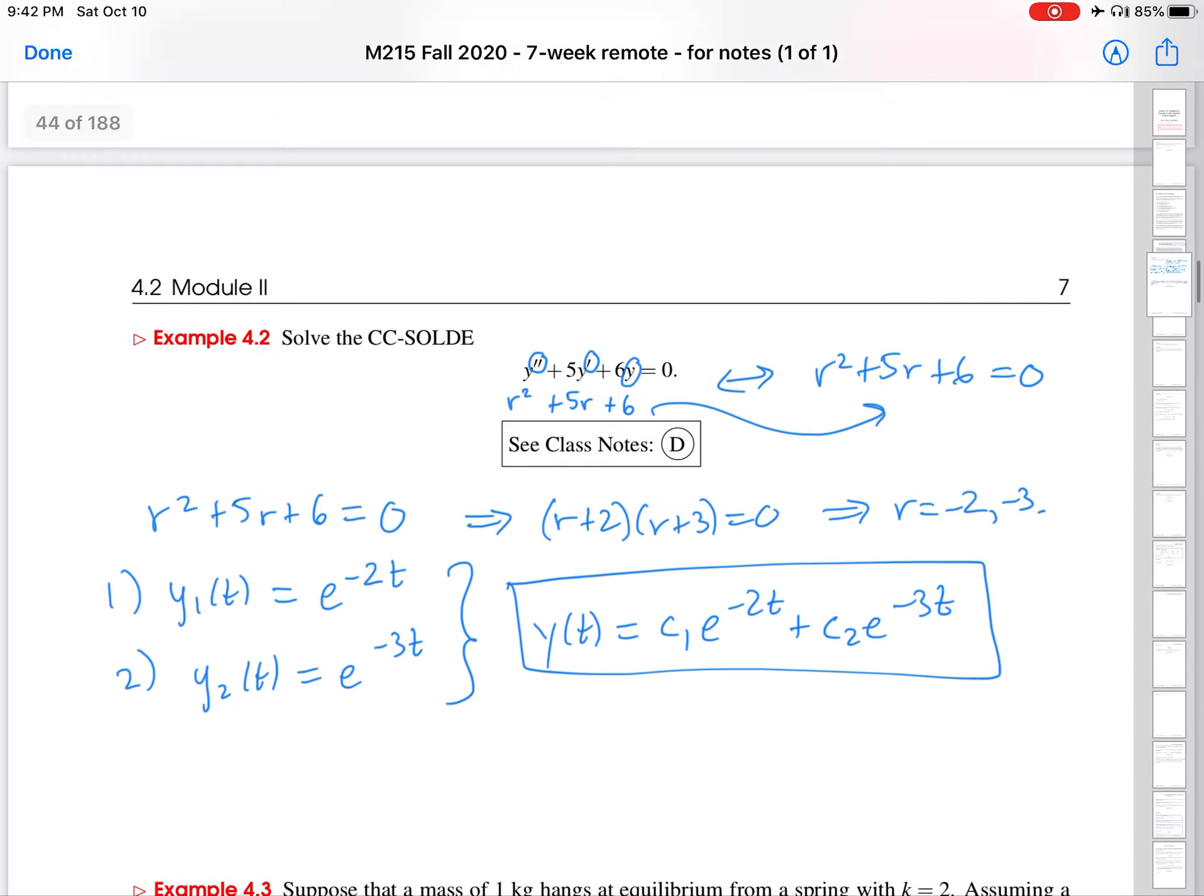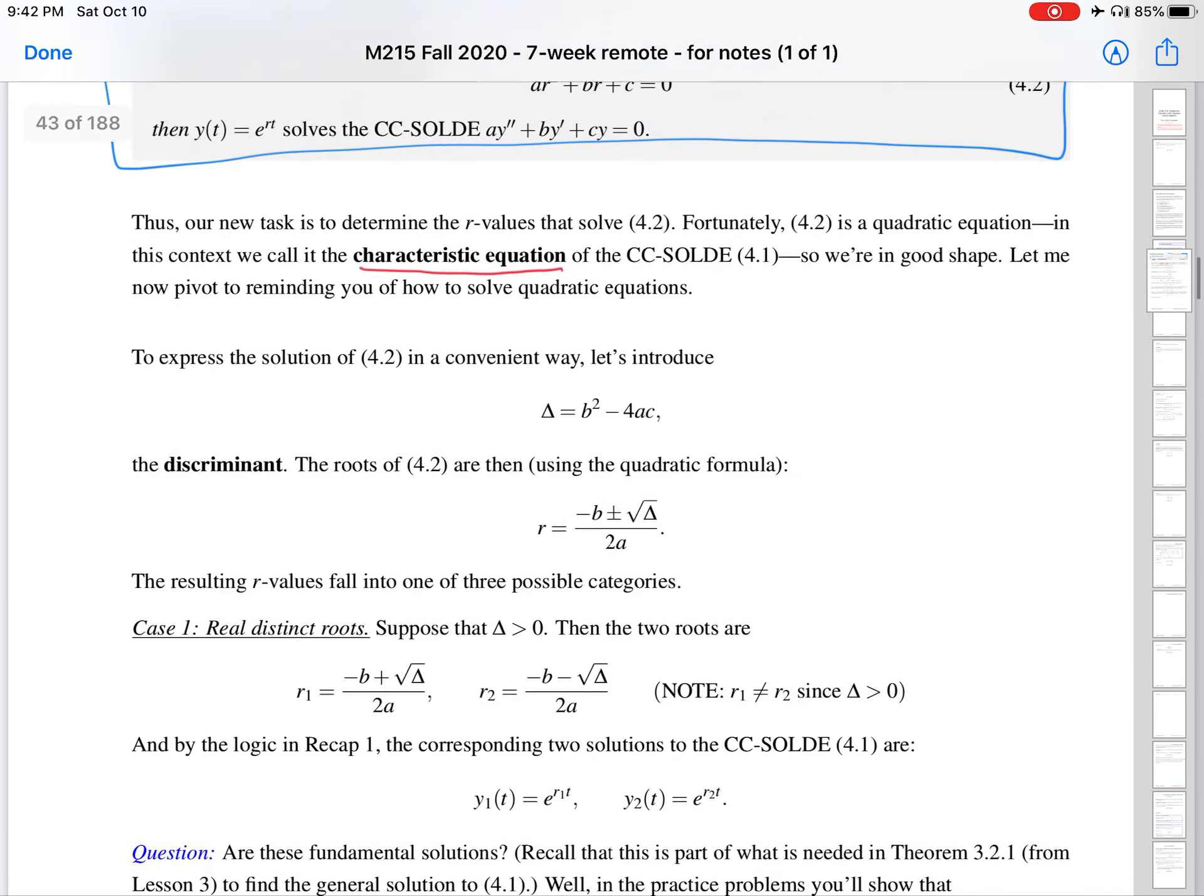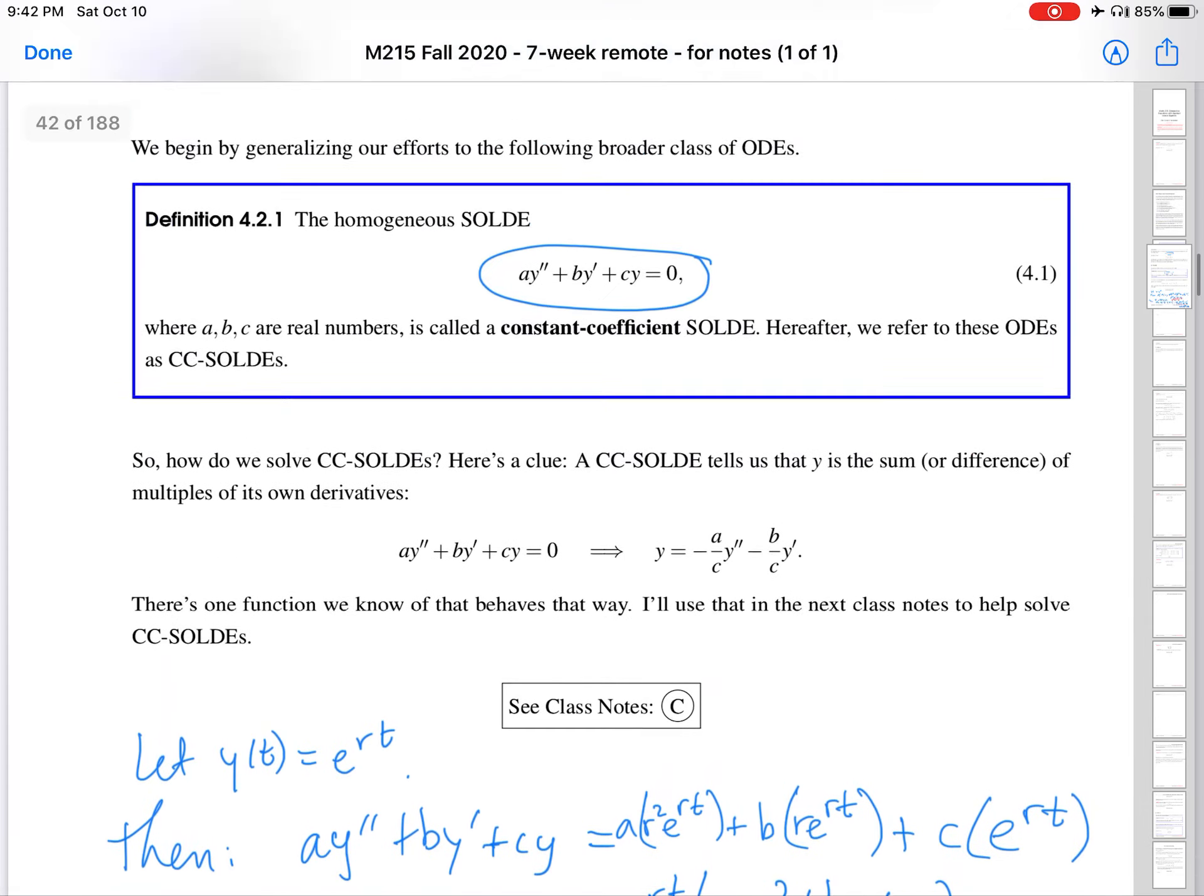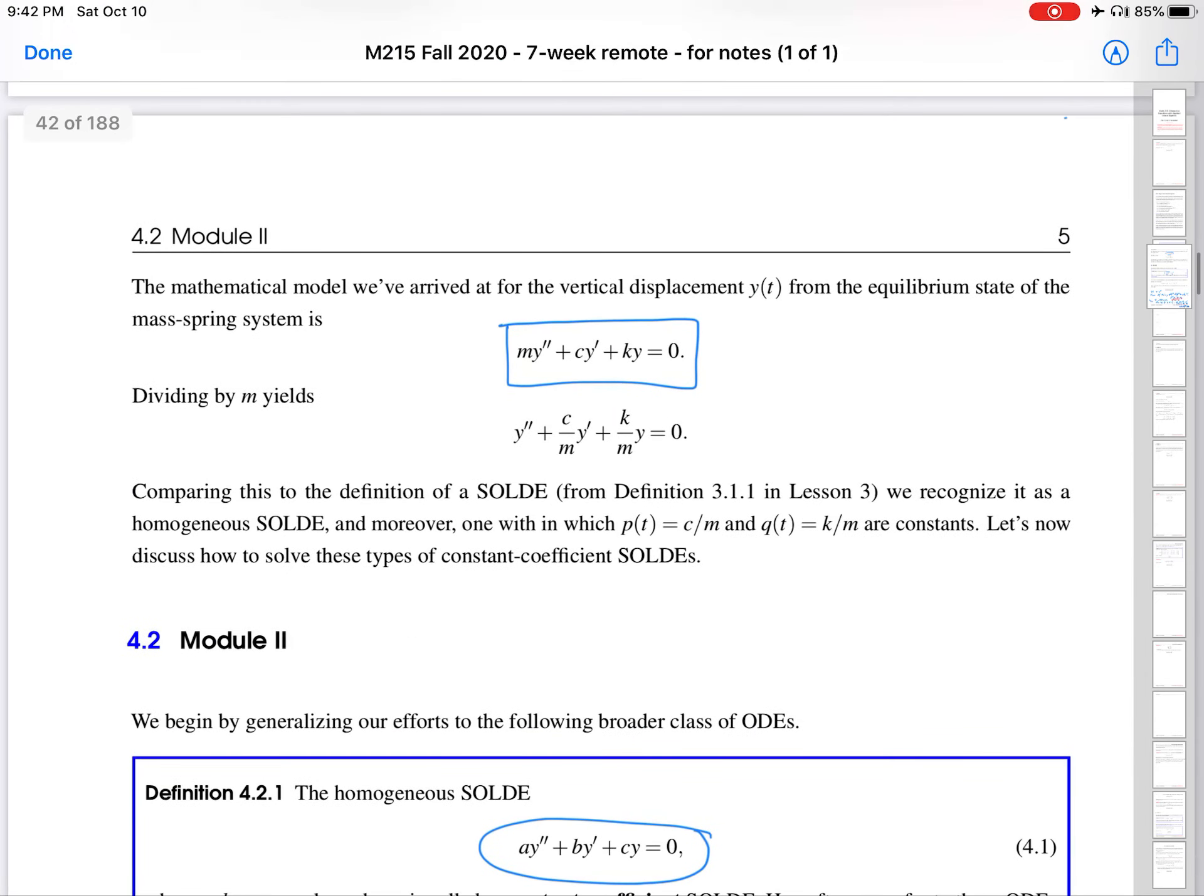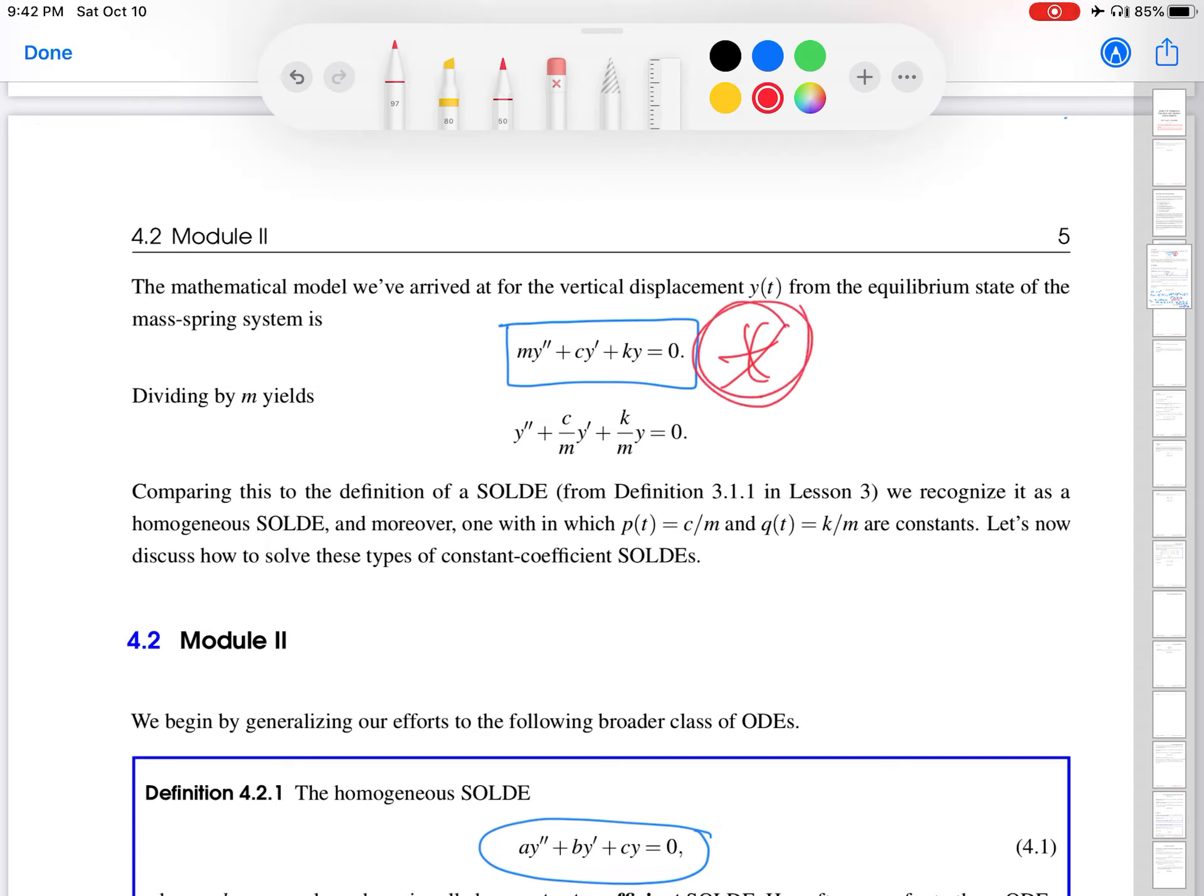So I'm going to scroll up a little bit, remind you of the model that we derived under exactly these sorts of conditions, and here it is up here. So this is what we are going to employ, and we're just going to plop in the M value, the C value, the K value, and then solve the ODE that results. So let me scroll back down to where we were, so that we can do all of that.